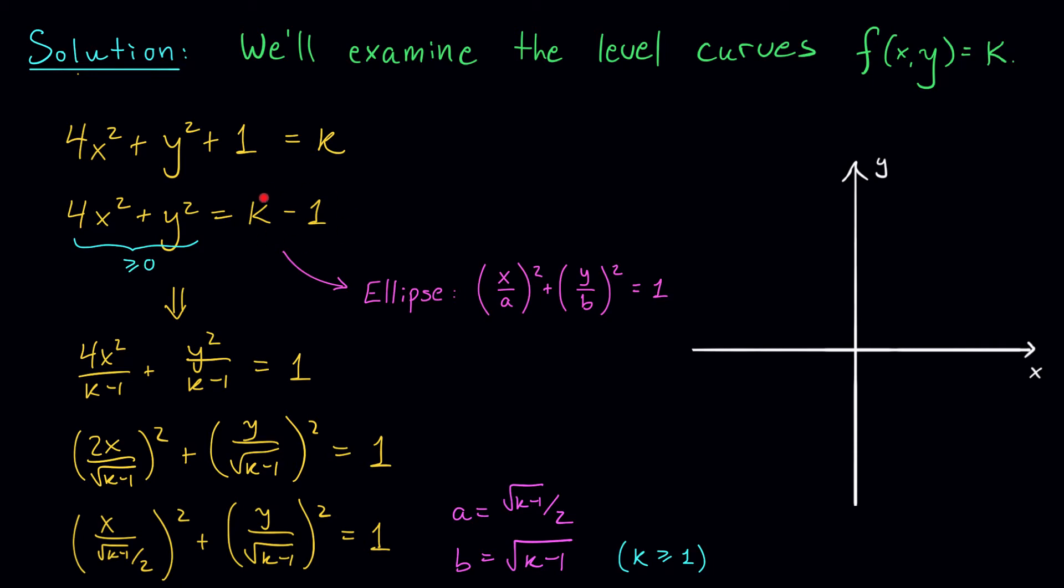The right-hand side must also therefore be non-negative. k - 1 is greater than or equal to 0, and hence k is greater than or equal to 1, just as we found below.